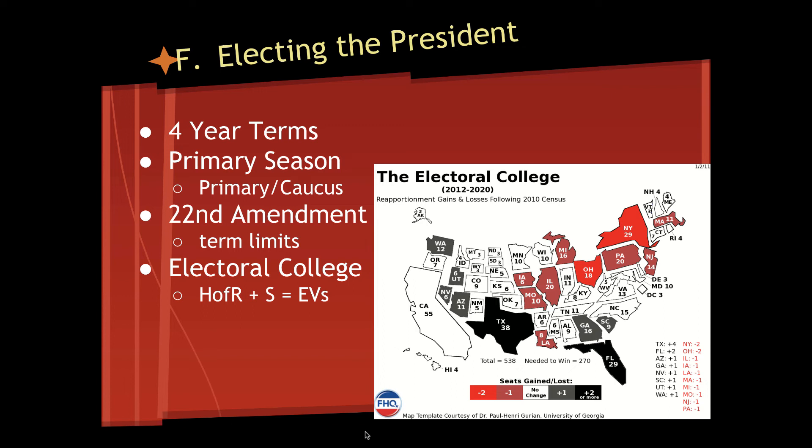Similar to the Senate, our framers were worried about the people being able to directly elect the President, so they created the Electoral College. The Electoral College consists of 538 presidential electors — each state has the same number as its representatives in the House plus its senators. On Election Day, in 48 of the 50 states, whether you win a state by one vote or a million votes, you win all of that state's electoral votes. The only exception is Maine and Nebraska, which use a district plan.